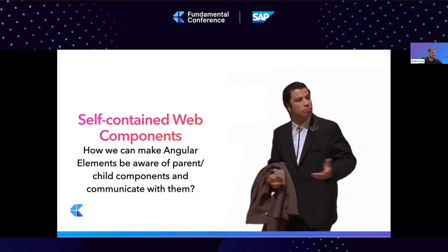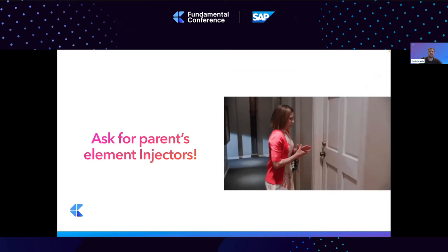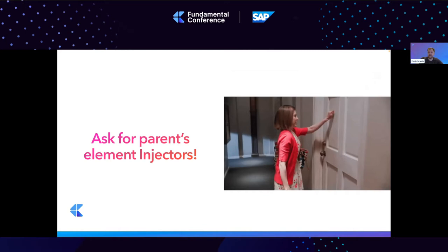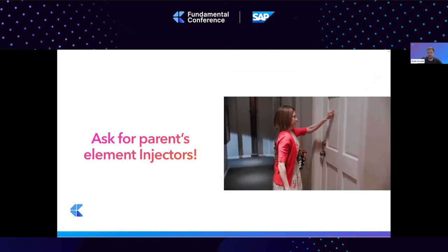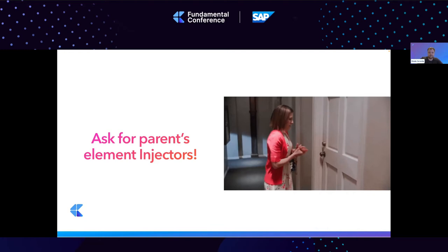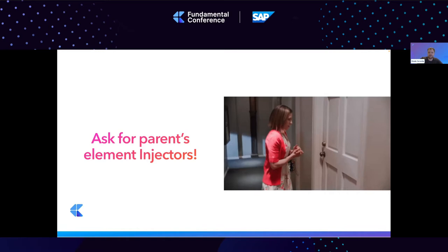The first question is: how can we communicate with parents? Components receive the injector from their module, which contains information about the declared components and imported modules. But there is another way — if you look into the API of custom elements, you'll see it also supports passing a custom factory class, which lets us do almost anything with the component and the web component element. So why not expose the module injector to the element and inherit it for child web components?